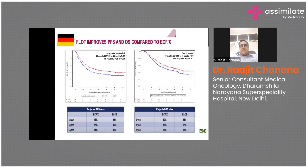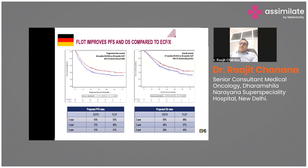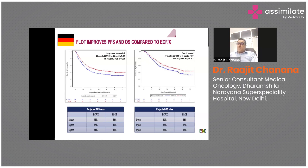The FLOT regimen improves both progression-free survival and overall survival, shown on Kaplan-Meier graphs. Progression-free survival with FLOT was 30 months compared to 18 months with ECF/ECX, and overall survival was 50 months with FLOT versus 37 months - a 13-month benefit. FLOT is now the standard treatment: four cycles before surgery and four cycles after, improving five-year overall survival from 36 percent to approximately 45 percent.